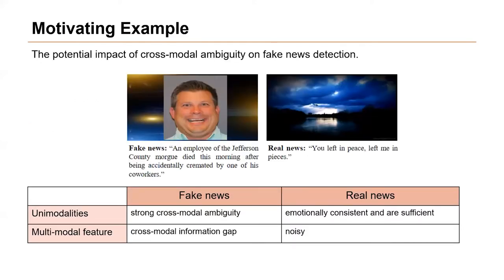This figure illustrates the potential impact of cross-modal ambiguity on fake news detection. The fake news example in the left figure tells a fictional death story but includes a smiling person's image. The text and image present strong cross-modal ambiguity, and multimodal feature fusion, which can capture such cross-modal information gap, may help improve the classification accuracy. In contrast, the real news example in the right figure expresses sad emotion with a blue image included, and the unimodal features are emotionally consistent and sufficient to determine its credibility.